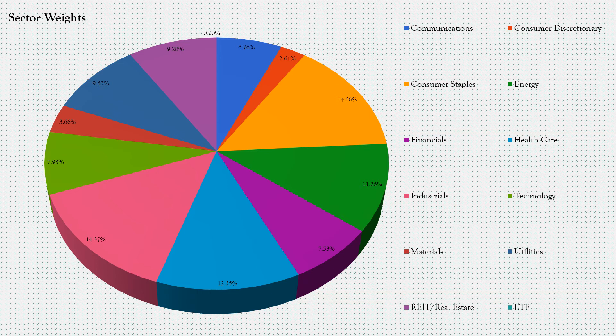Here's a quick breakdown of my portfolio and how it's broken up by sector. Communications at 6.76%, consumer discretionary at 2.61%, consumer staples currently at 14.6% — one of my larger positions because consumer staples tend to do well in any market. Energy is 11.26%. Financials at 7.53%, healthcare at 12.35%, industrials at 14.37% — a little heavier weighted right now as I've been actively investing in a couple companies in that sector. Technology at 7.98%. Materials at 3.66%, utilities at 9.63%, REITs and real estate at 9.20%. I don't currently have any ETFs, though I may invest in some in the future. You can look at ETFs, invest in the companies those ETFs invest in yourself, make up your own ETF, and not pay any fees.